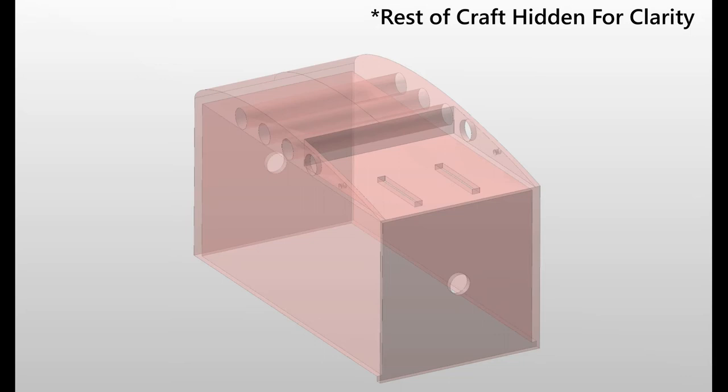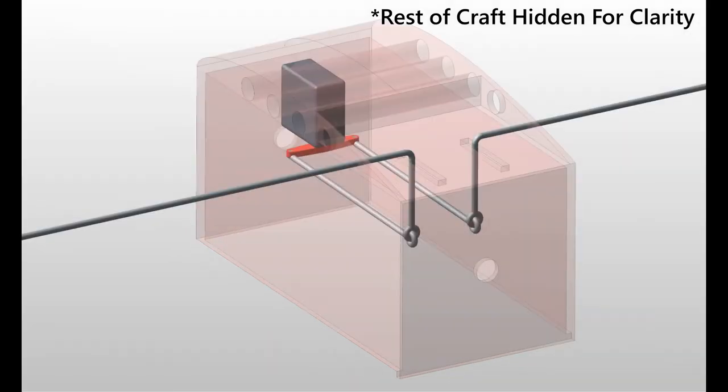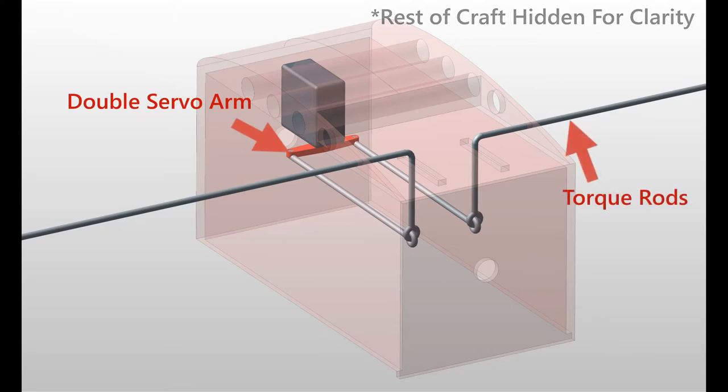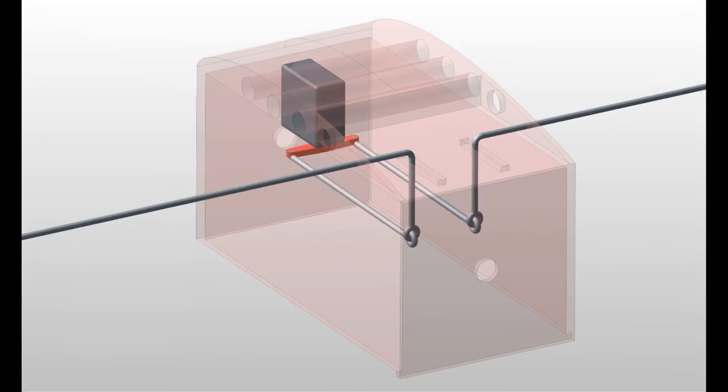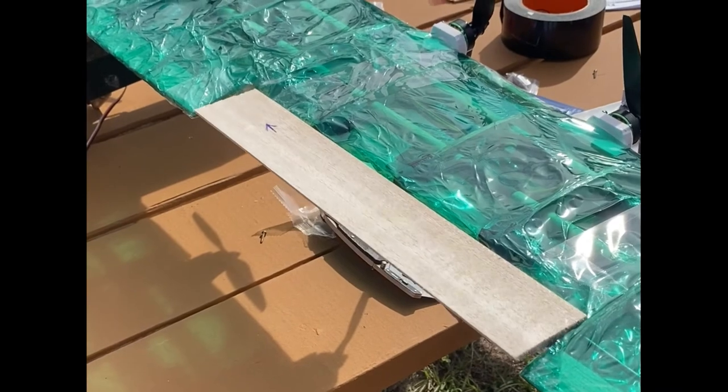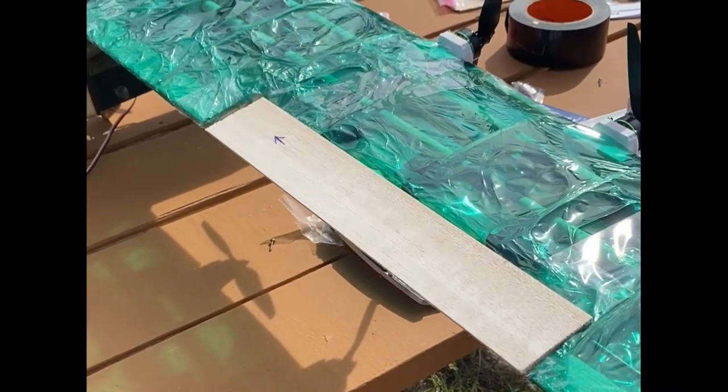Both ailerons are controlled by a single servo mounted in the main body of the craft. The servo has a double arm attached to it, connected to torque rods running through the wings to the ailerons by push-pull rods. As one side of the double arm servo rotates away, the other rotates forward, creating an opposite rotation in each of the torque arms. The torque arms are directly attached to the ailerons, so as they rotate in opposite directions, the ailerons do as well.